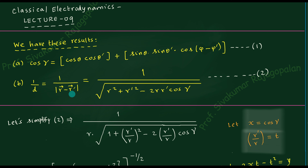In addition to the distance, we also have the angle between the two vectors r and r'. The angle between vector r and vector r' is represented by the symbol gamma. Gamma is neither theta nor theta prime, nor phi nor phi prime. Even though four angles are involved, none of them directly represent the angle between the two vectors, which is why we derived this particular expression for cos gamma.